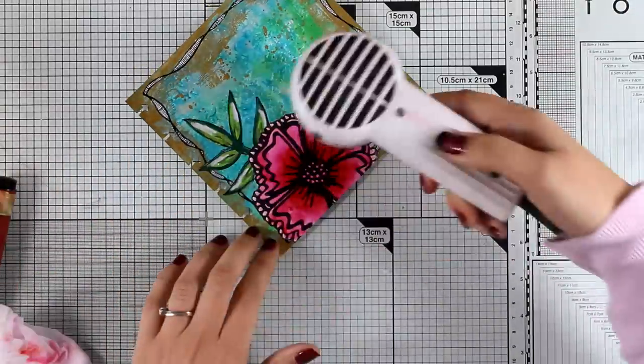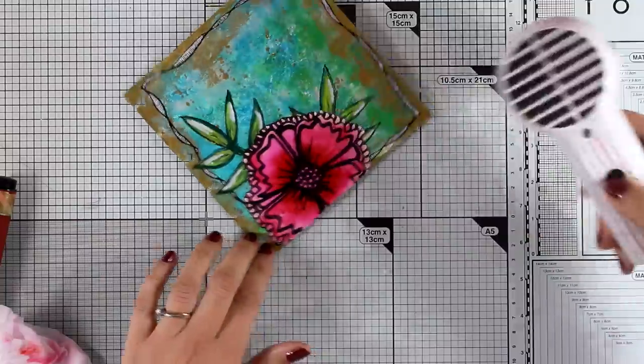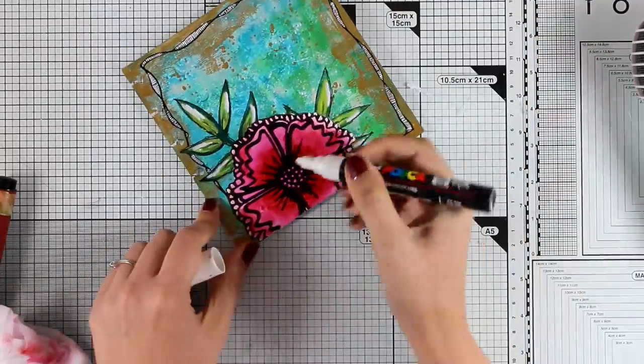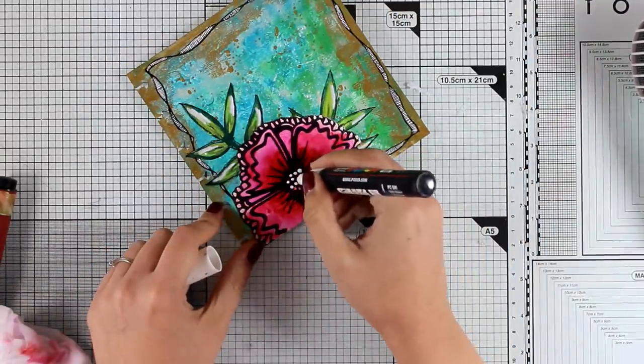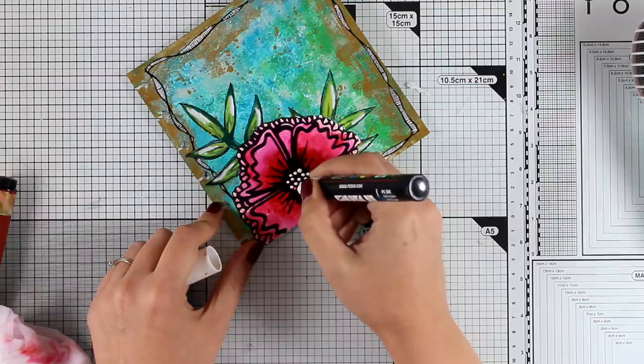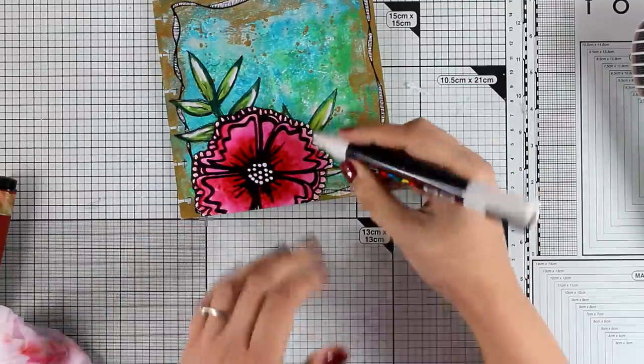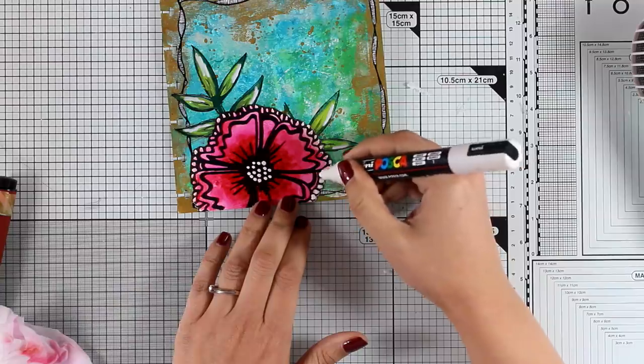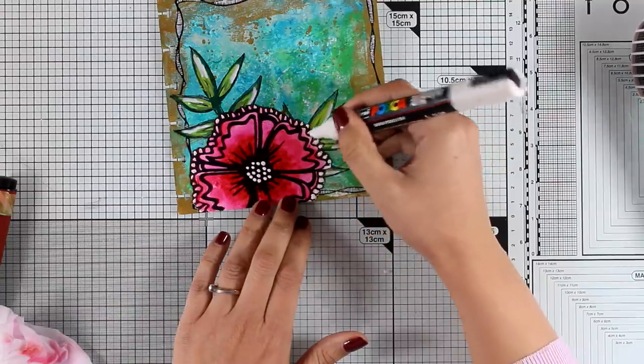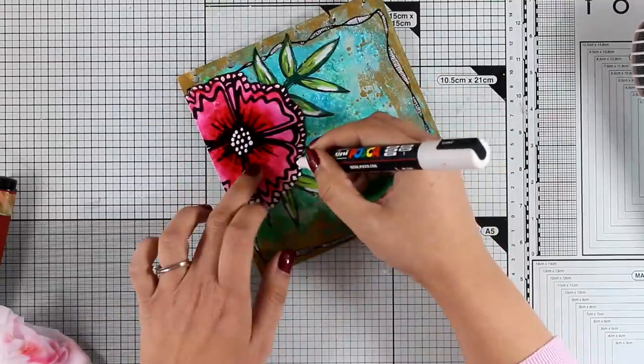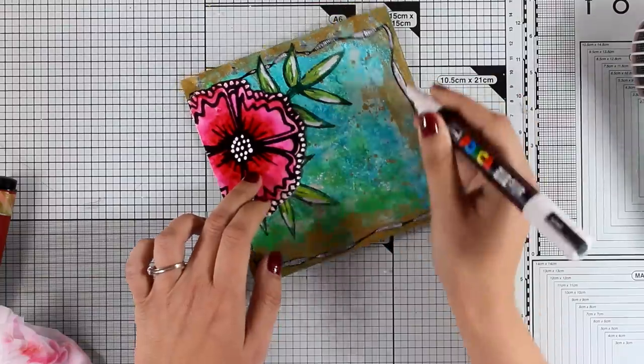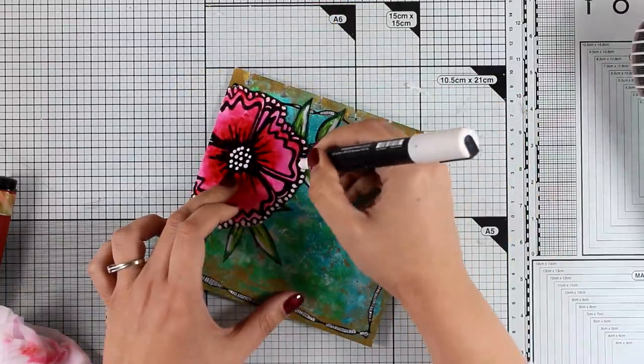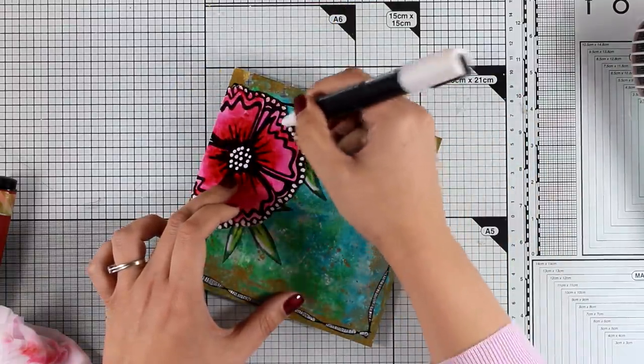When you heat set the ink, it's going to turn the ink into permanent so you will not be able to move it anymore. Now with my Posca white pen, I'm going to add some white dots at the center of my flower and embellish my flower as much as I can. I'm just playing around here and having fun with my mediums. I'm going to add some white dots at the perimeter of the flower, and I think this is a lovely flower design for art journaling.